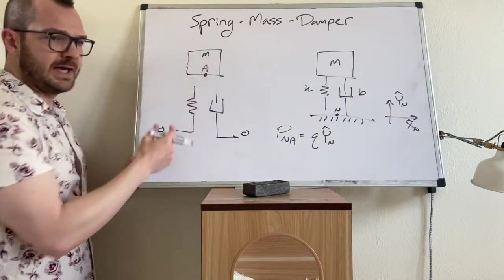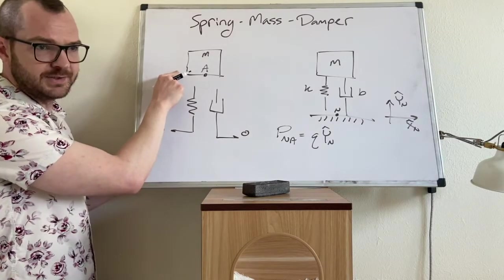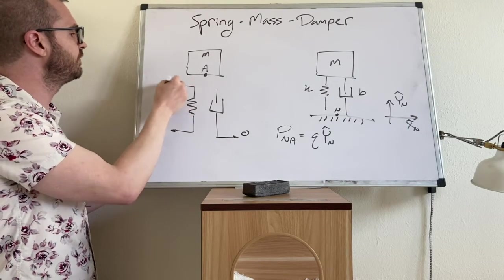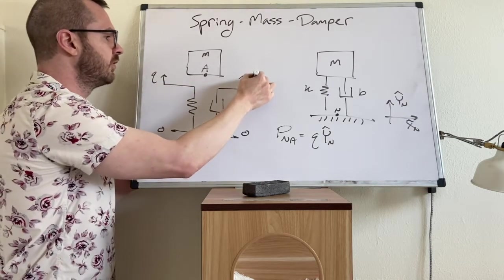All right, so the block a is moving with variable q. Consider that the spring and the damper they're attached to the mass. So these are also moving with the variable q.